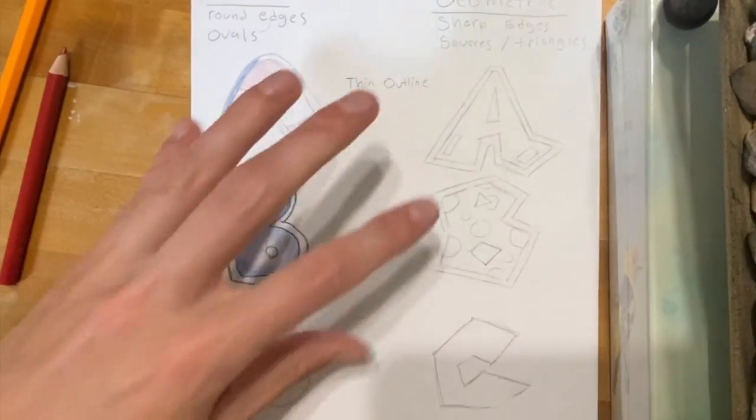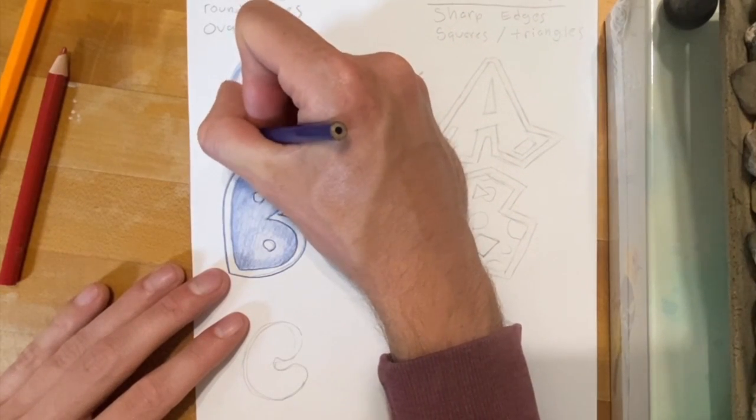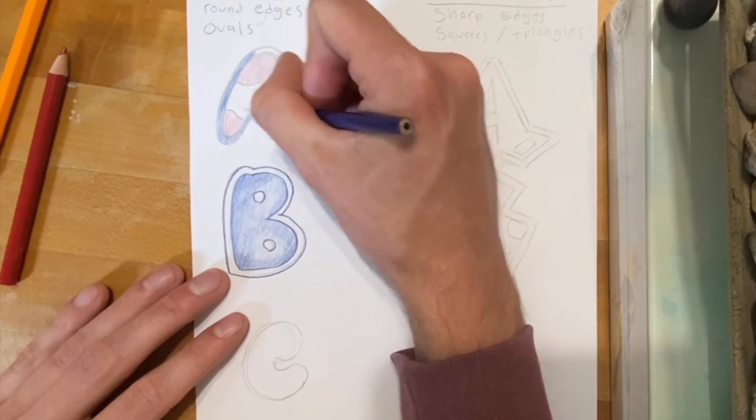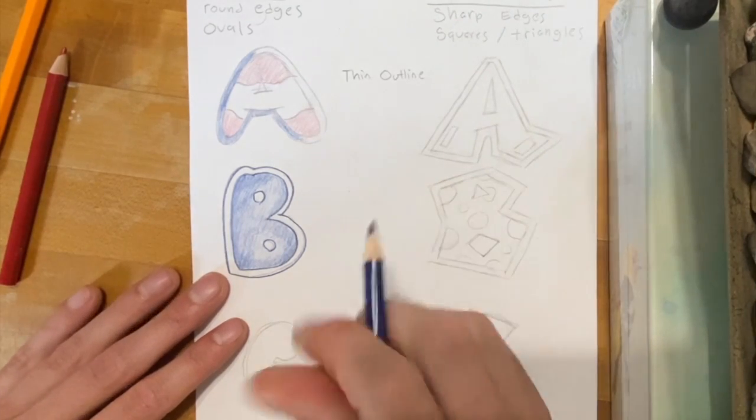But go ahead and work on finishing all six of your letters. Make them look finished, like imagine they're each an individual drawing, not just a letter. Then do the best you can do, and that's gonna be our lesson for the day. All right, have fun with it.